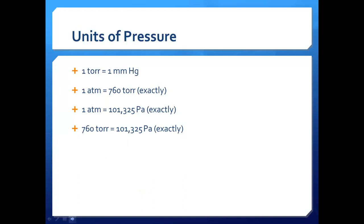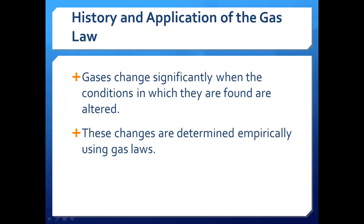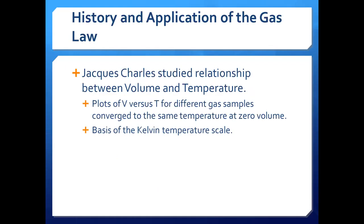These are the different units of pressure. Gas laws tell us that gases change significantly when conditions are altered — changing one parameter causes a change in behavior. These changes are determined empirically; the gas laws were derived from experimental data. Experiments were performed and the data were used to establish the general behavior of gases under changing conditions.